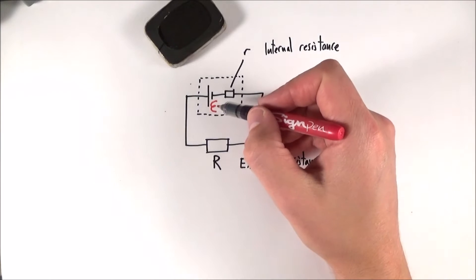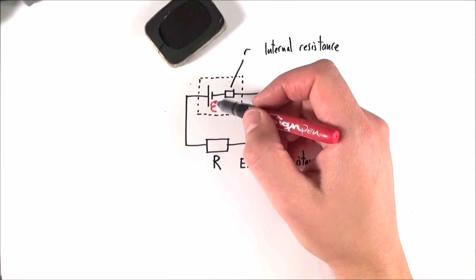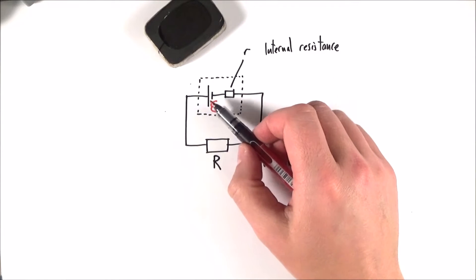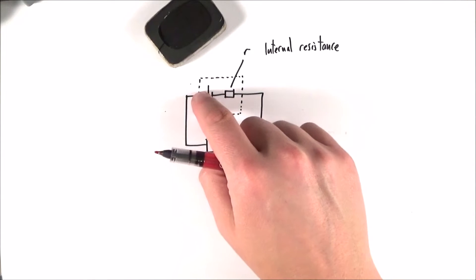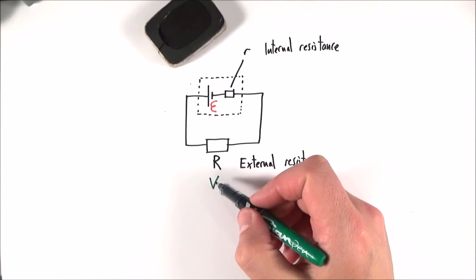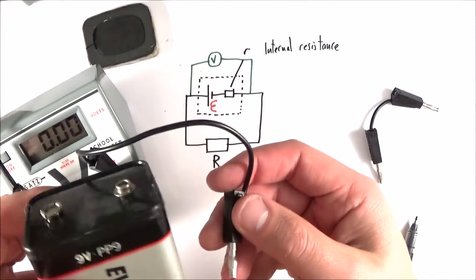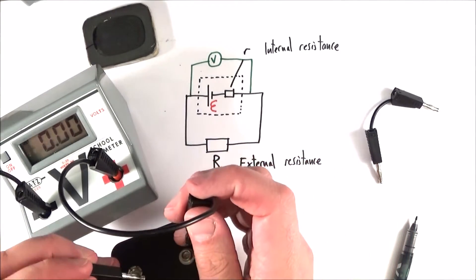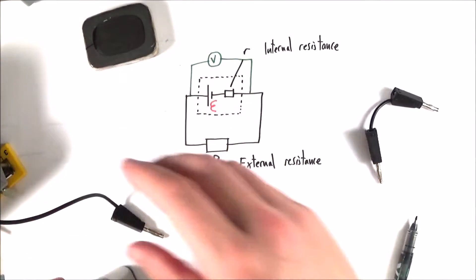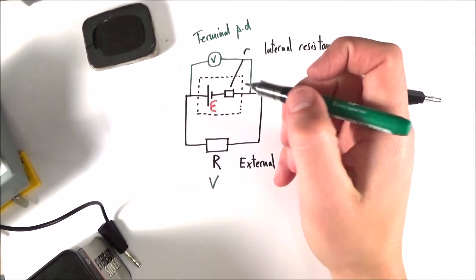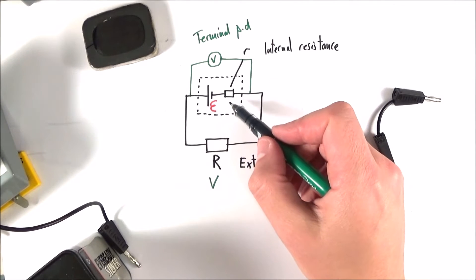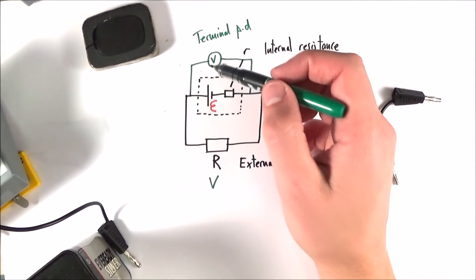The source of EMF is the maximum amount of energy given to each unit of charge. In reality, although we might have a high EMF, not all of the energy is given into the circuit, because some energy is used up as the charge carriers move through that power source. We can also look at the potential difference in the rest of the circuit, our value of V. If I measure across the terminals of this cell, I get what we call the terminal PD — the output we get from that cell. The more current flows, the greater the effect of internal resistance, and the smaller the terminal PD actually is.